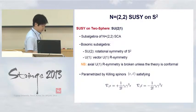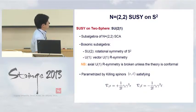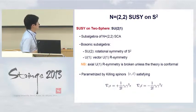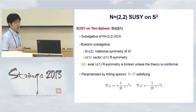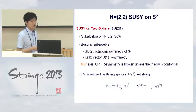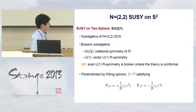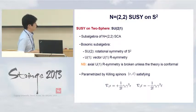The supersymmetry algebra on the two-sphere is given by SU(2|1), which is a subalgebra of the N=(2,2) superconformal algebra. It contains SU(2) and U(1) as a bosonic subalgebra, where SU(2) is the rotational symmetry of the two-sphere and U(1) is the vector U(1) R-symmetry. However, the axial U(1) R-symmetry is explicitly broken on the two-sphere, unless the theory preserves conformal symmetry. This SU(2|1) supersymmetry is parameterized by two Killing spinors, ε and ε̄, satisfying those Killing spinor equations.